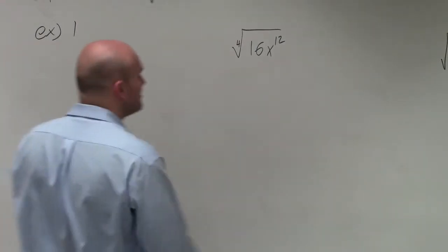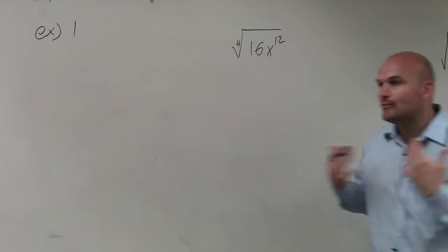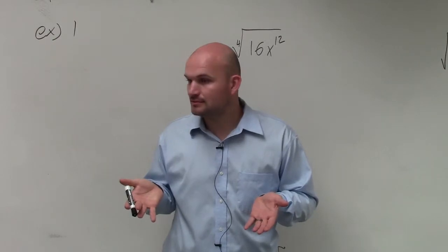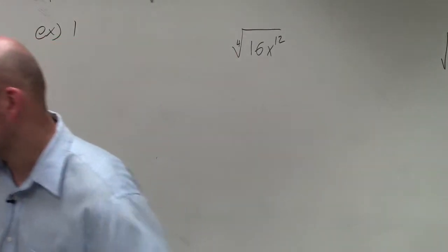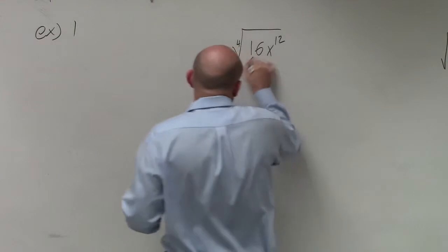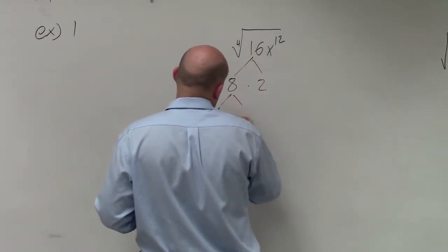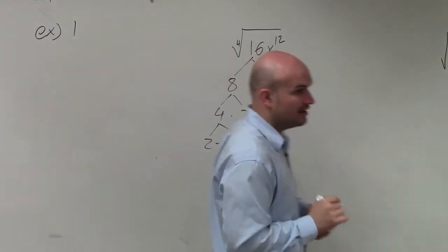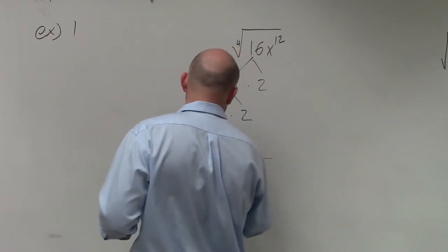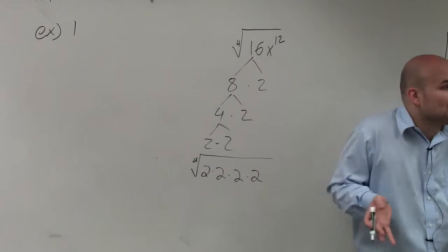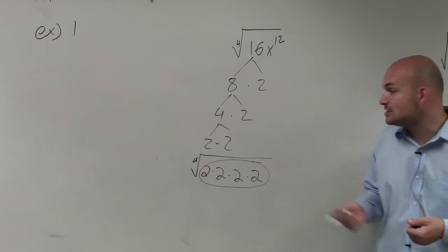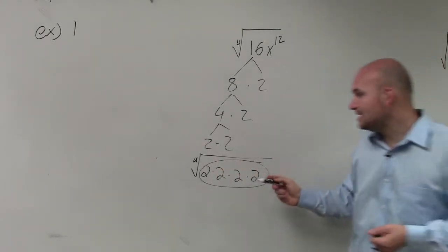When we're doing the fourth root, remember when we're looking at simplifying radical expressions, the fourth root is just saying what number multiplied by itself four times. There are two different ways we could do this. We could use the factor tree by breaking down the problem — 8 times 2, 4 times 2, and 2 times 2. If we break down the problem into prime factors, the fourth root of 2 times 2 times 2 times 2 — what number multiplied by itself four times? Well, 2 is being multiplied by itself four times. So the fourth root of 16 is just 2.